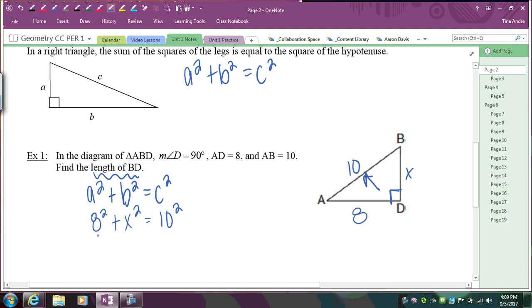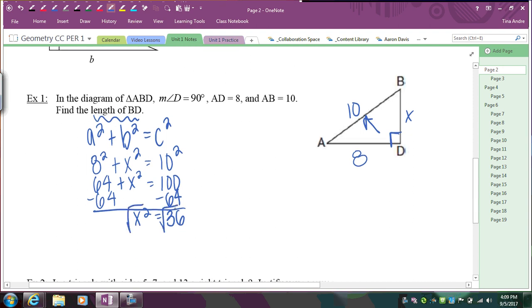So 8 squared plus X squared equals 10 squared. And then we just simplify this. So 8 squared gives me 64 plus X squared equals 10 squared, which is 100. We have to get X by itself. So I'm going to subtract 64 from both sides. So we get X squared equals 36. And again, getting X by itself means we're going to square root both sides. To undo a squared term, you're going to square root. So square root, and you get X equals 6. So to make sure we actually answer the question, what is the length of BD? Well, the length of BD is equal to 6. 6 units.